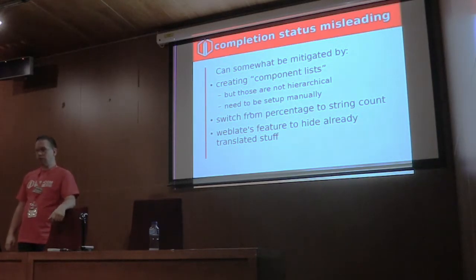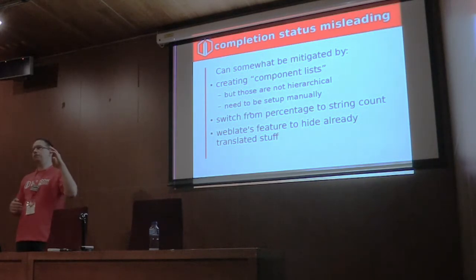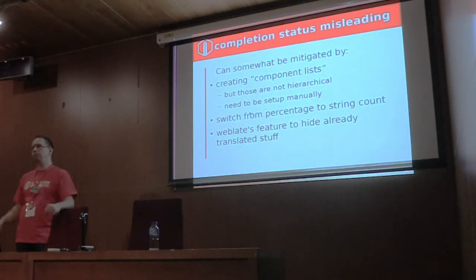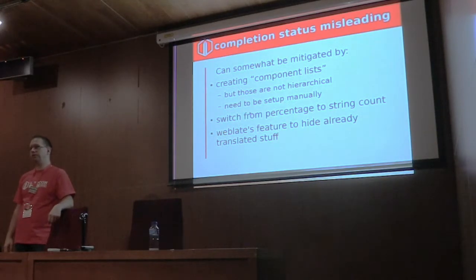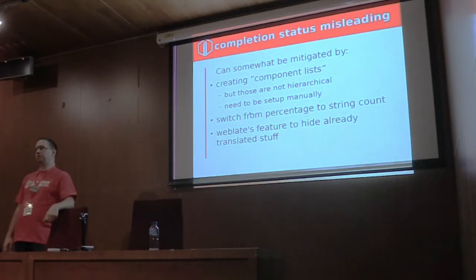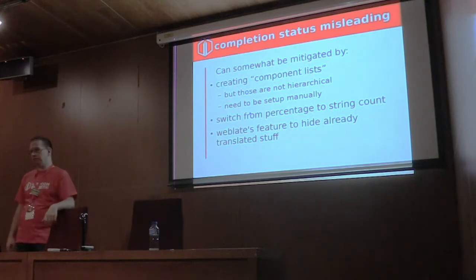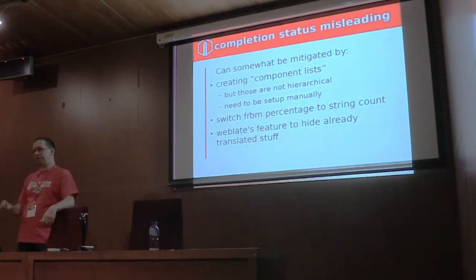You can also set the overview to show strings with suggestions that need review, which is much more useful for languages that already have a high translation completion rate. Just enabling 'hide completed translations' in the options means you don't have to deal with multiple pages of file structure to get to the ones that still need work.